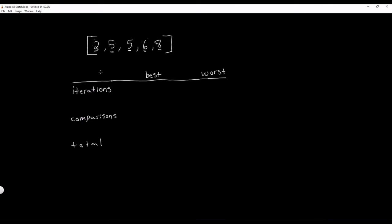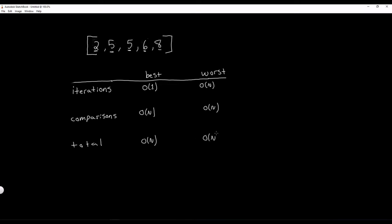Now let's talk about the time complexity of this algorithm. In the best case scenario, when our array is already sorted, we only need one single iteration, so this is O(N) or linear. In the worst case scenario, our array is sorted in reverse order and we need O(N) iterations. In each iteration, we need N minus 1 comparisons, so O(N). The total gives us O(N) for the best case and O(N²) or quadratic time for the worst case.